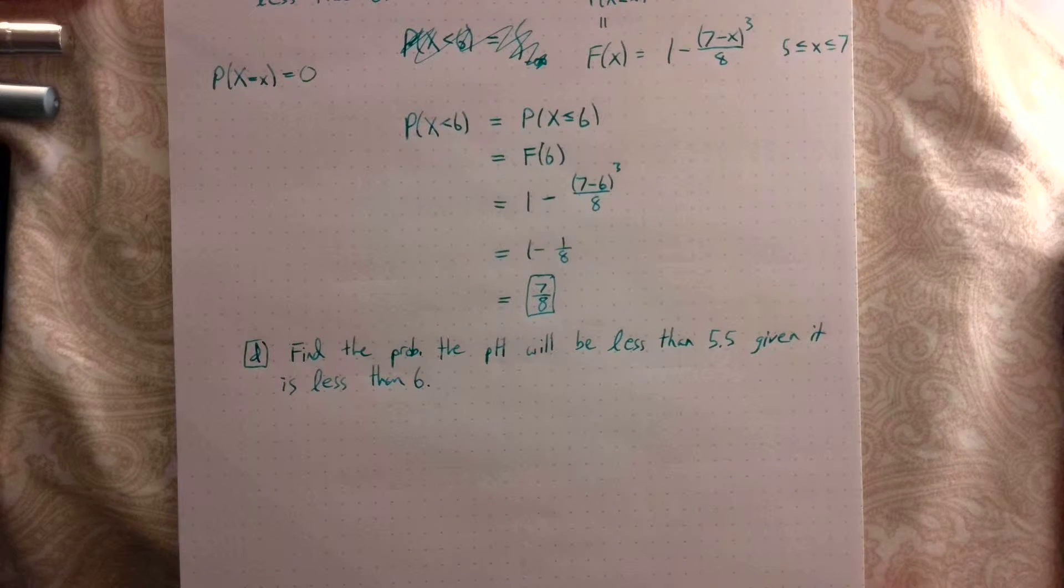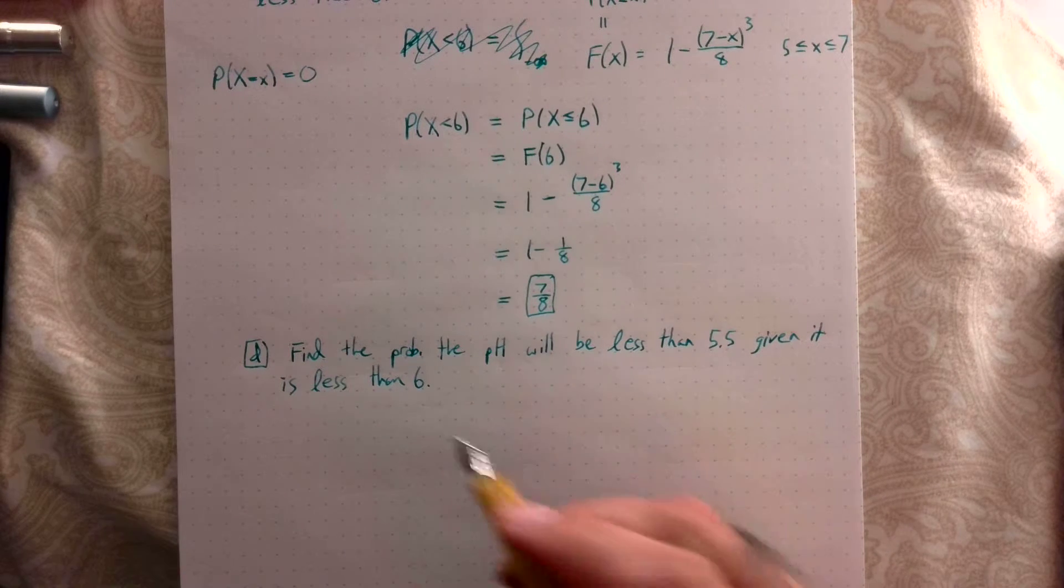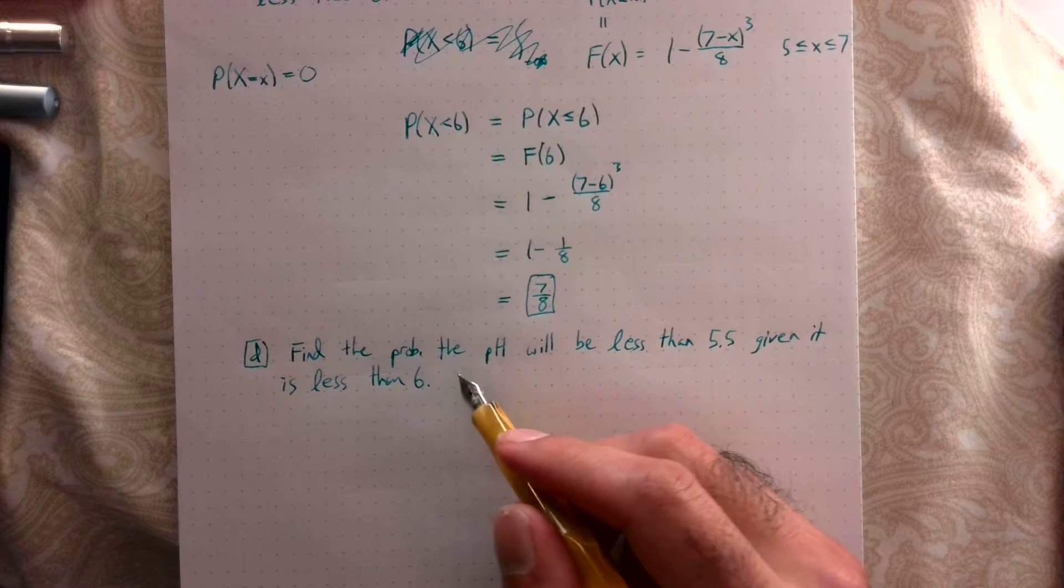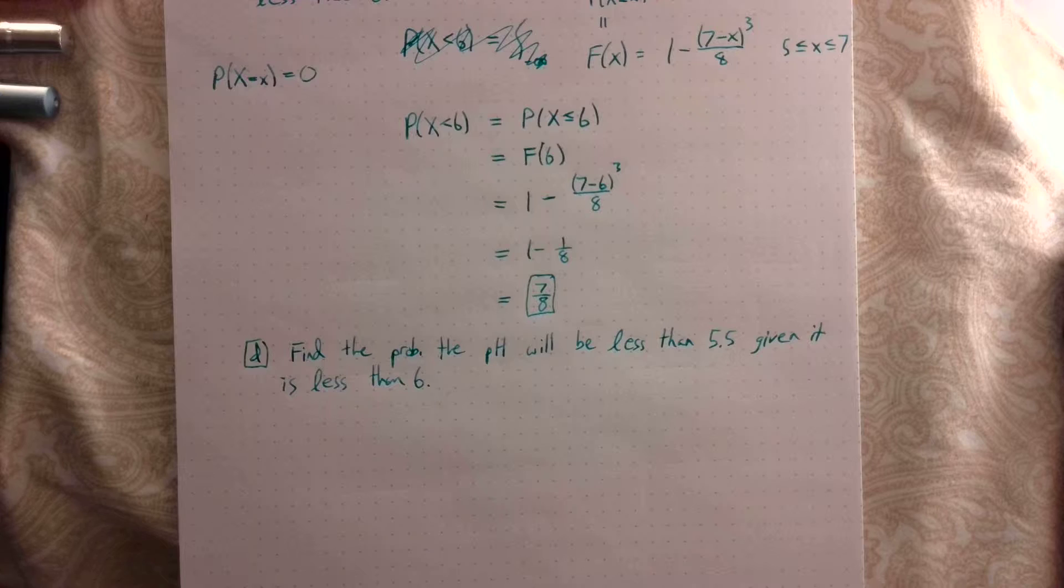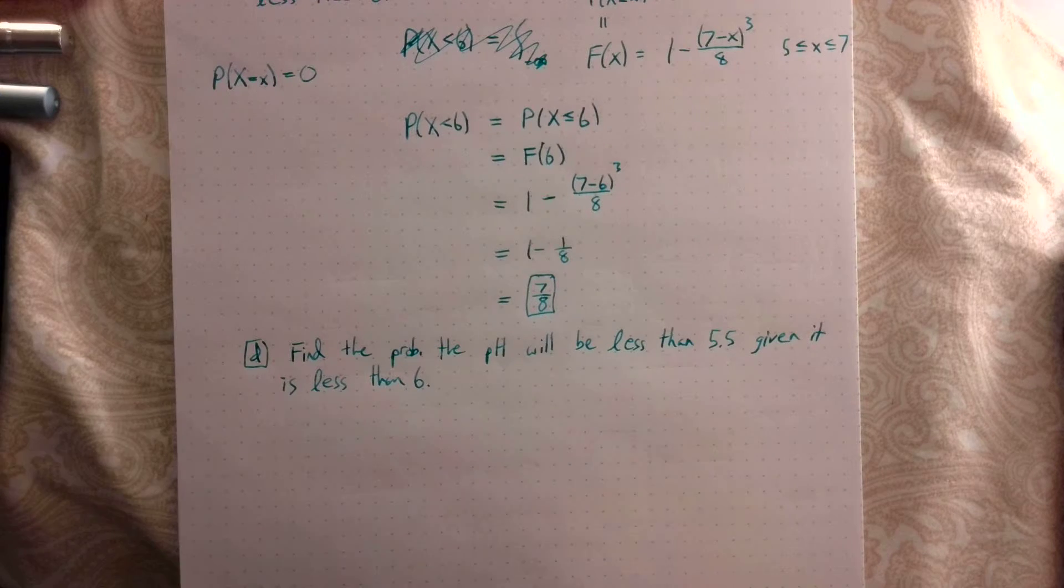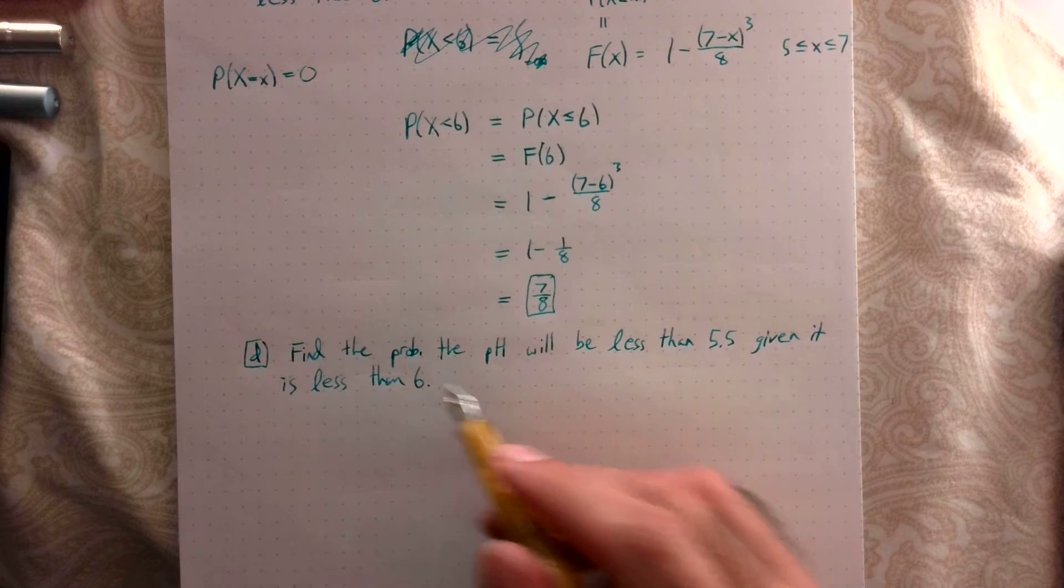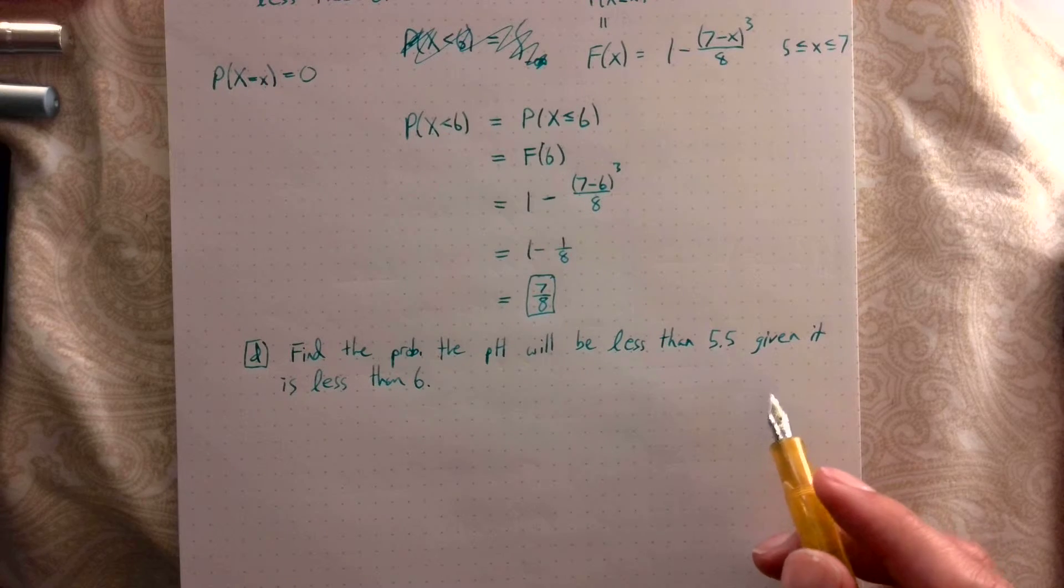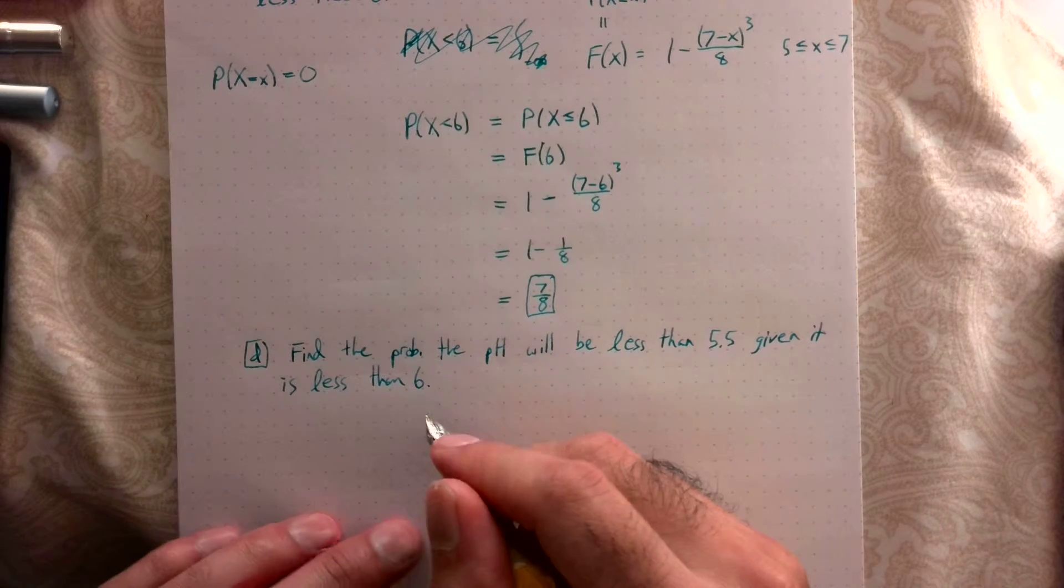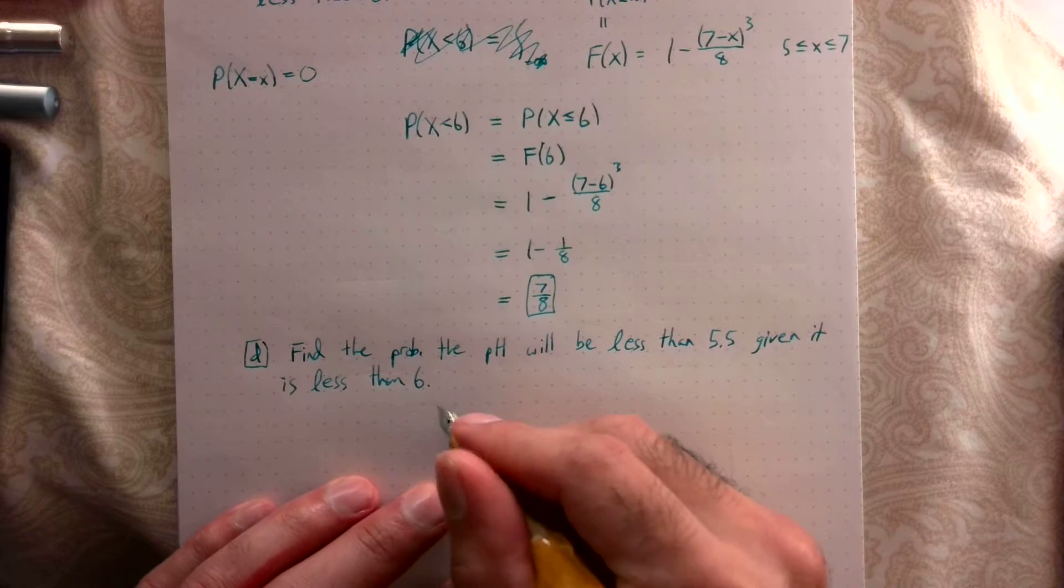All right, so for part D of 5.10, I shortened the problem a little bit to get rid of wordings that you don't necessarily need. We're looking for the probability that the pH will be less than 5.5, given that it is less than 6. So this is a conditional probability.